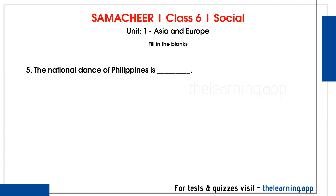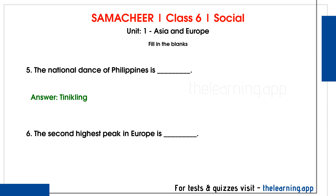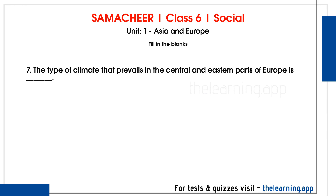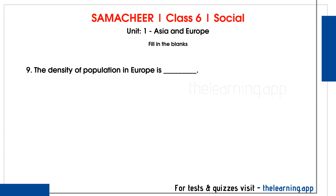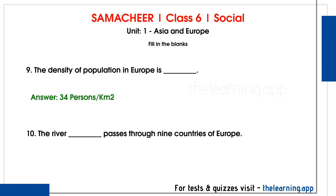Question 5: The national dance of Philippines is dash. Correct answer is: Tinikling. Question 6: The second highest peak in Europe is dash. Correct answer is: Mont Blanc, 4,807 meters. Question 7: The type of climate that prevails in the central and eastern parts of Europe is dash. Correct answer is: Continental type. Question 8: The important fishing ground in the North Sea is dash. Correct answer is: Dogger Bank. Question 9: The density of population in Europe is dash. Correct answer is: 34 persons per km². Question 10: The river dash passes through 9 countries of Europe. Correct answer is: Danube.